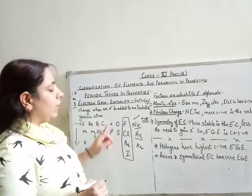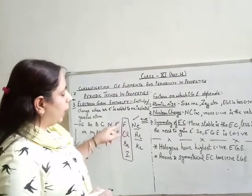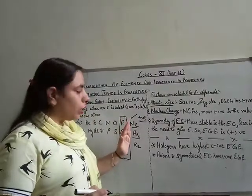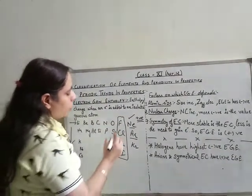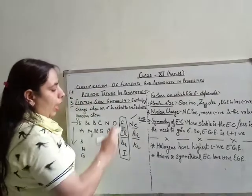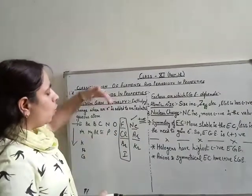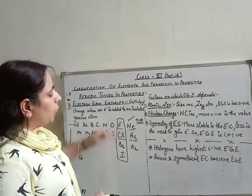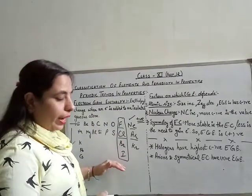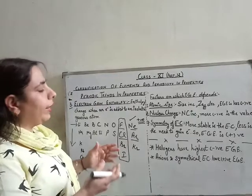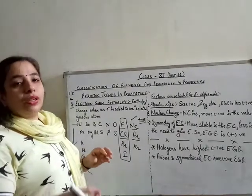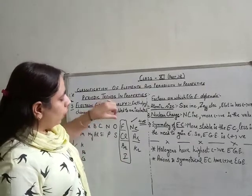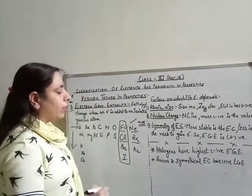Within the halogens, going down the group — fluorine, chlorine, bromine, iodine — the atomic size increases, so the tendency to attract the incoming electron decreases. The electron strikes with less force and less energy is released, making the electron gain enthalpy value less negative going down the group.